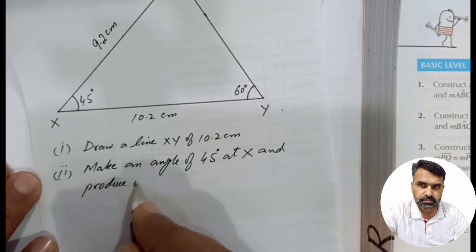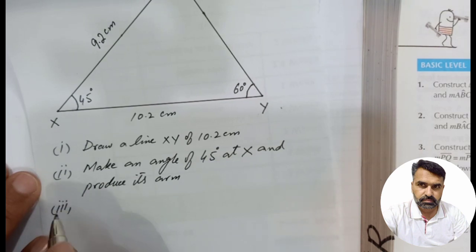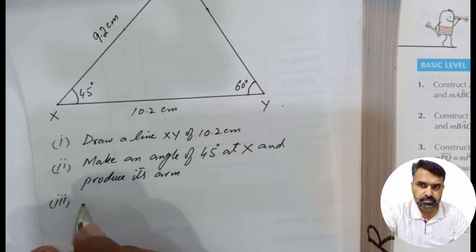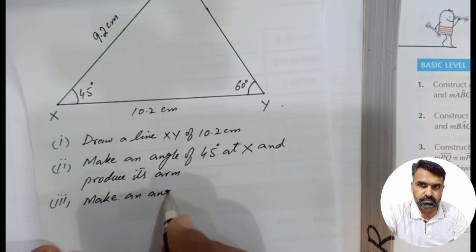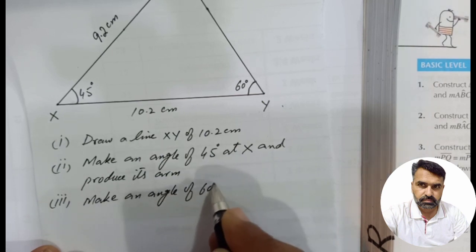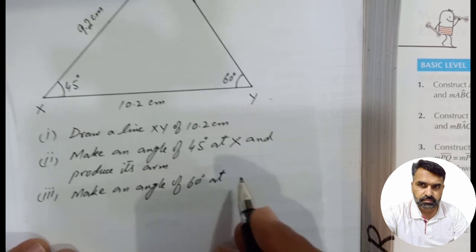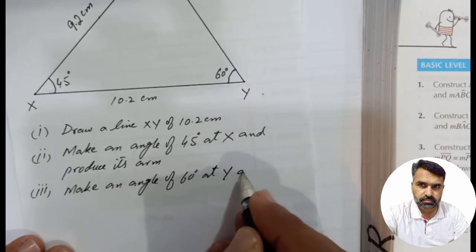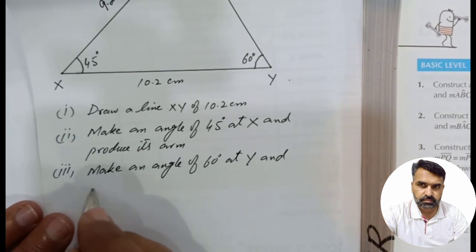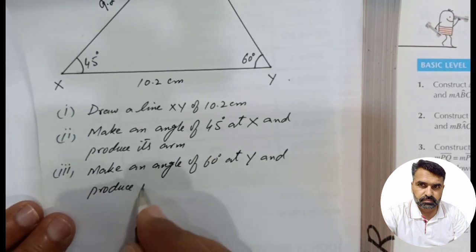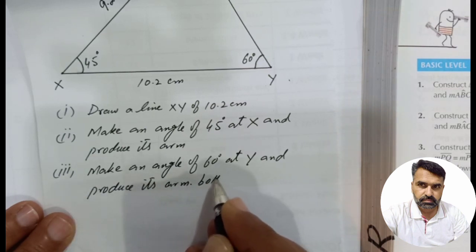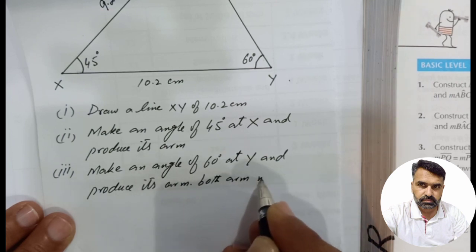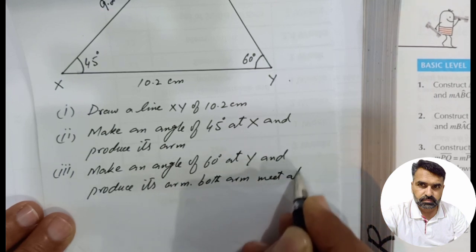Step 3 - make an angle of 60 degrees at point Y and produce its arm. Both arms meet at Z.